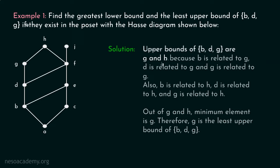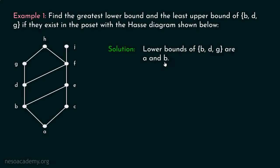Now let's try to find the greatest lower bound of B, D, G. Lower bounds of B, D, G are A and B. Obviously, A is related to B, A is related to D, and A is related to G. B is related to B, B is related to D, and B is related to G. Therefore A and B are the lower bounds of B, D, and G. No other element is considered as a lower bound of B, D, G. C is not related to B, so C cannot be the lower bound. E is not related to D, so E cannot be the lower bound. F is not related to G, so F is not considered as a lower bound. Therefore it is clear that A and B are the lower bounds of B, D, and G.